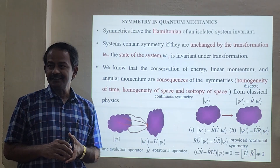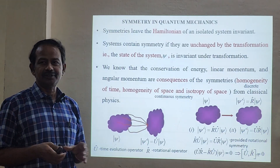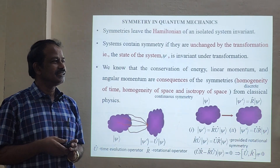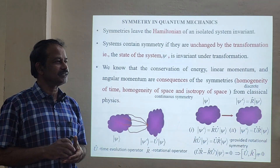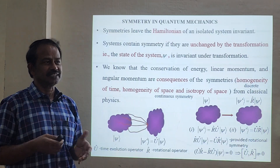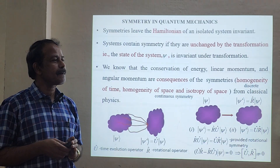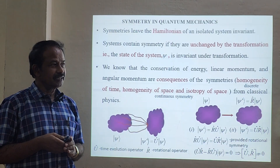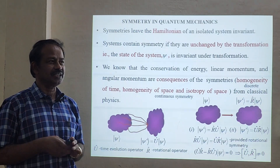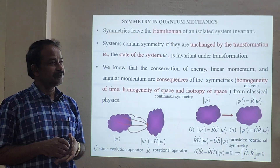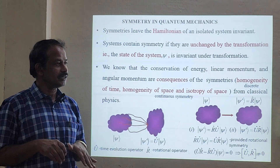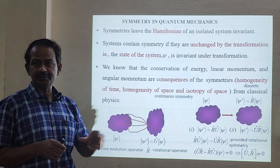Symmetry is something we already know about from day-to-day life. For example, if we have a mirror, this will exactly resemble the object in the opposite direction — what we call the inversion property. The concept of symmetry will be different in different subjects, so they are not unique. But in quantum mechanics, the concept of symmetry is taken exactly from classical mechanics.